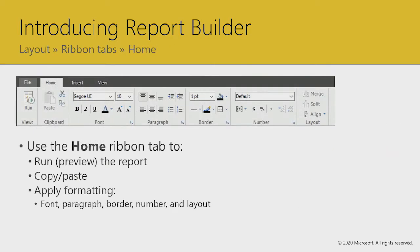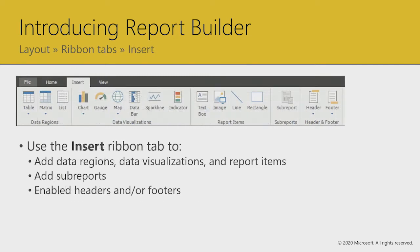On the Home ribbon, the first command is the Run command, allowing you to switch between design and preview — also accessible at the bottom right next to the Zoom control. The rest of the capabilities cover formatting: copy paste, fonts, paragraphs, borders, numbers, and alignment. The Insert ribbon tab presents all of the tools to add objects to your report design layout. These consist of data regions, data visualizations, and report items — we'll look at them in more detail in module five.